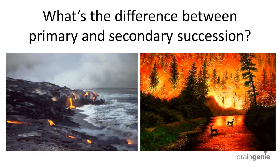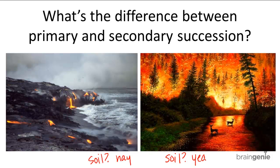Here's the difference between primary and secondary succession. In primary ecological succession, the ecosystem must rebuild after being completely destroyed to the point where even the soil is gone. Whereas in secondary ecological succession, the ecosystem rebuilds when the soil is still intact. So the main difference between these two types of ecological succession is the presence of soil at the beginning of the process. In fact, the main feature of primary ecological succession is soil formation.